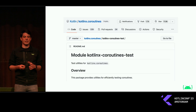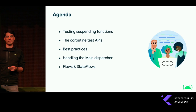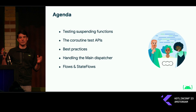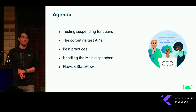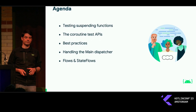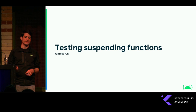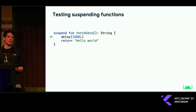Luckily, we have a testing library for this from JetBrains, which is KotlinX coroutines test. So we'll be using those APIs during this talk. A quick overview of what we'll cover: we'll start from the very basics of calling suspending functions in tests, then we'll take a look at the theory and overview of the coroutine testing API. We'll look at some best practices, some Android-specific things like handling the main dispatcher, and finally we'll wrap up by taking a look at flows and state flows. So let's get started with the basics of calling suspending functions in tests.